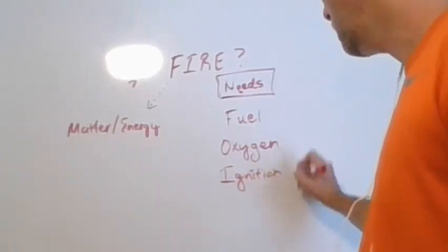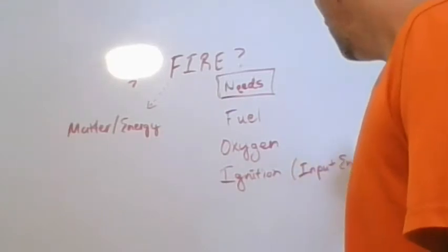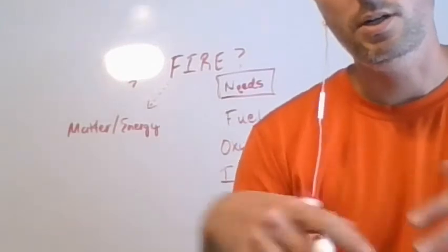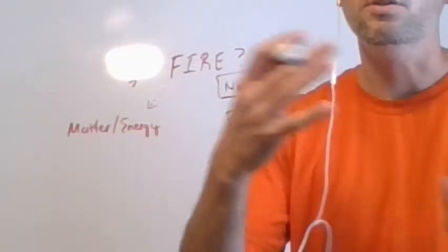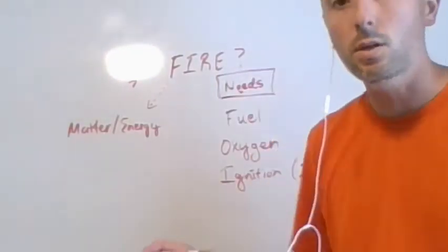Now, with ignition, we're talking really about an input energy. Now if we were actually in class, I'd show you it doesn't always have to be another fire. So for example, you can start fires with friction, you can start fires with thermal energy, like with light, there's a variety of ways to do this.